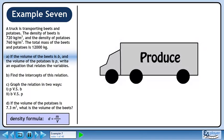A truck is transporting beets and potatoes. The density of beets is 720 kg per cubic meter and the density of potatoes is 760 kg per cubic meter. The total mass of the beets and potatoes is 12,000 kg.